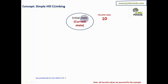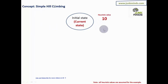The initial state is where I begin. Any state currently being processed is called the current state — obviously, when I start, the initial state is the current state. I've applied a rule and calculated the heuristic value. How this value is calculated you can see in the previous video; for now I'll just assume the value is 10.